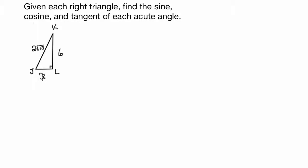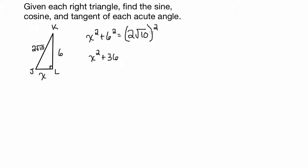We'll call this side x, and we're going to say x squared plus 6 squared equals 2 root 10, and then that quantity squared. So x squared we have to leave, 6 squared we know is 36. Now what is 2 root 10 squared? When you take a quantity like 2 root 10 and you're squaring it, you're squaring each individual part of it. So it's 2 squared times root 10 squared — you can think of it as distributing the squared to both parts, because this is multiplication.